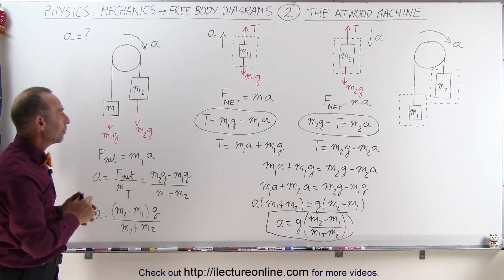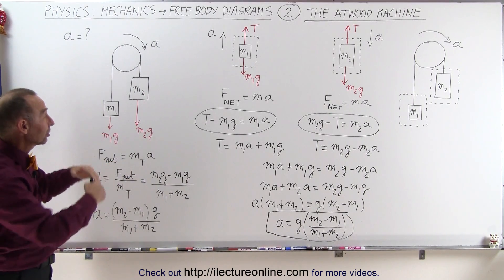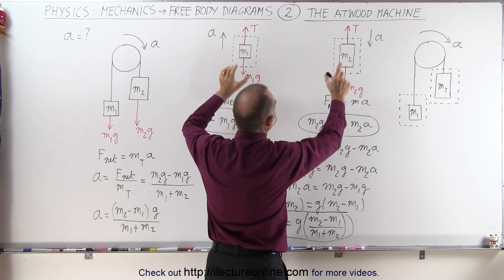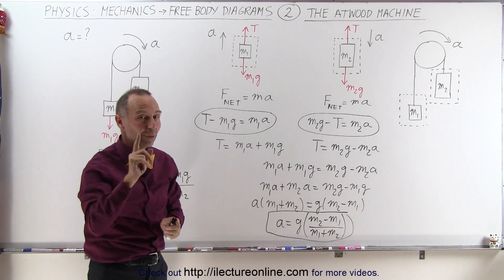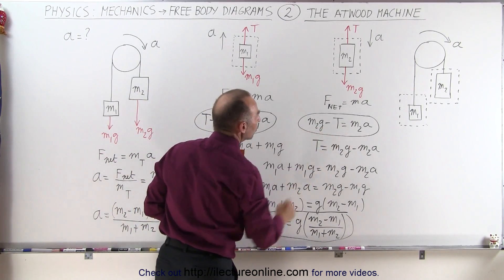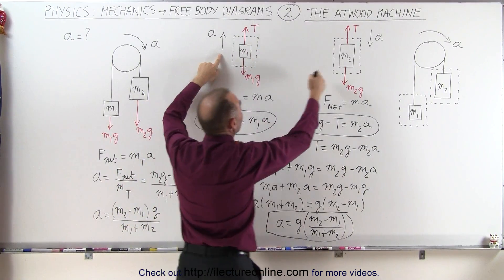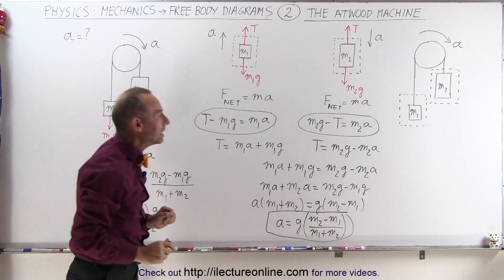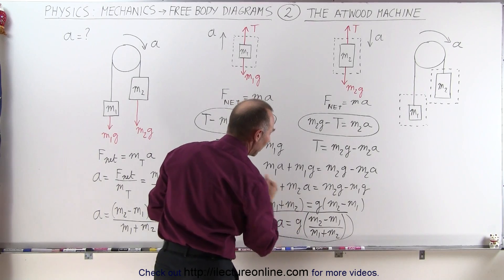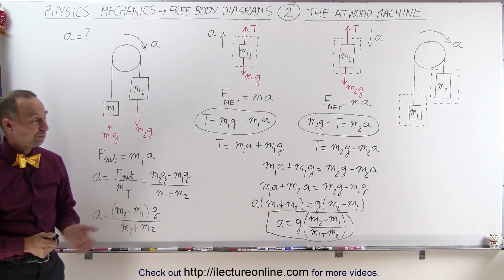You can solve the same problem in two ways. First, only consider the external forces on the whole system using F net equals MA, where M is the total mass. Second, take each object separately, draw a free-body diagram for each, look at all the forces acting on each body, and use F net equals MA. The net force is always forces aiding minus forces opposing. Determine which forces aid or oppose by looking at the direction the acceleration arrow points — upward for M1, downward for M2. You end up with two equations and two unknowns, solve each for T, set them equal to eliminate T, and solve for acceleration. Both methods side by side, depending on which your professor requires.